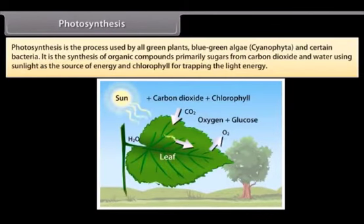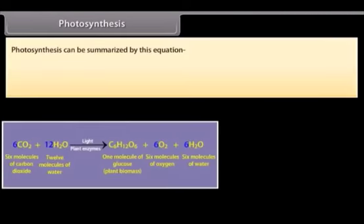Carbon dioxide and water using sunlight as the source of energy and chlorophyll for trapping the light energy. Photosynthesis can be summarized by this equation.